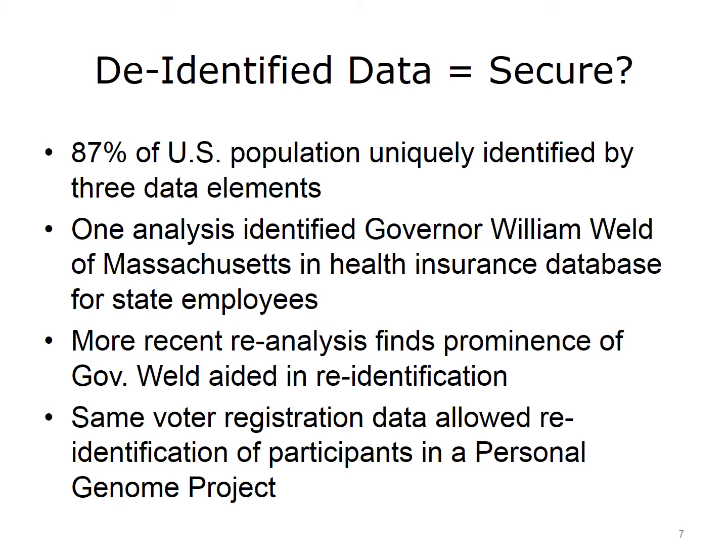In some additional early work by Sweeney in 1997, she showed that after spending $20 to purchase a voter registration list for Cambridge, Massachusetts, she was able to identify the governor of Massachusetts, William Weld, in a health insurance database for state employees simply by linking zip code, gender, and date of birth from the voter registration list to the de-identified health data in the health insurance database. It must be noted that recent reanalysis of the population demographics found that Mr. Weld was a public figure who experienced a much-publicized hospitalization, which played a part in his being so easily identifiable in the insurance database.